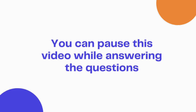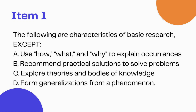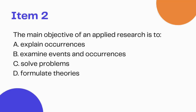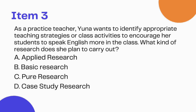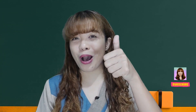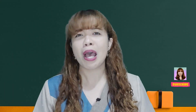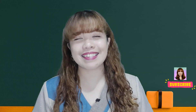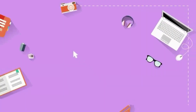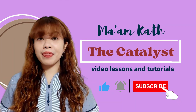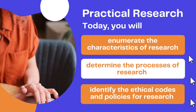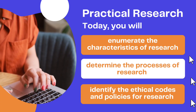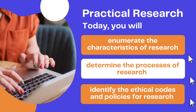Kindly answer the following questions. Great job! Now that you already know the difference between basic and applied research, let us now discuss and dig deeper into research. We'll discuss the characteristics, the different processes, and also the ethics of research. Today, you will first enumerate the characteristics of research, determine the processes of research, and lastly, identify the ethical codes and policies for research.